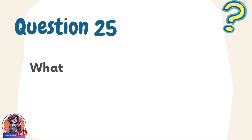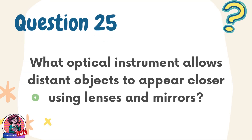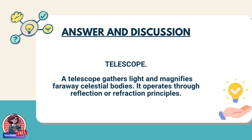Question 25. What optical instrument allows distant objects to appear closer using lenses and mirrors? Answer: telescope. A telescope gathers light and magnifies faraway celestial bodies. It operates through reflection or refraction principles.